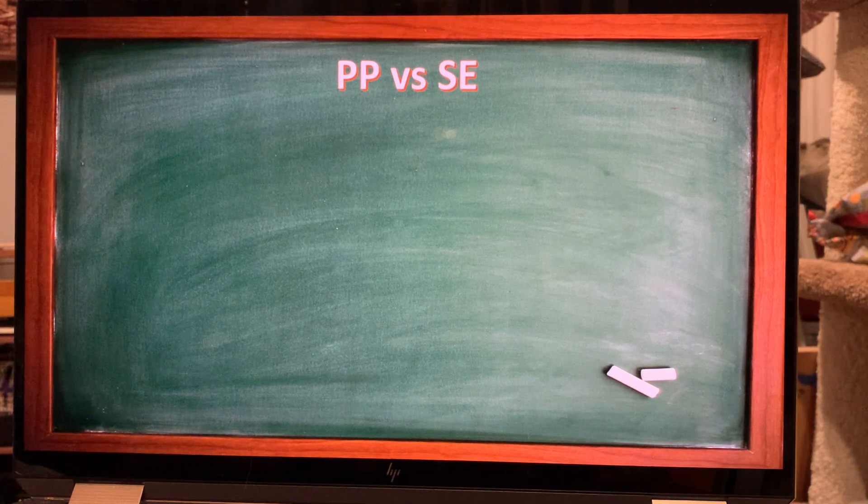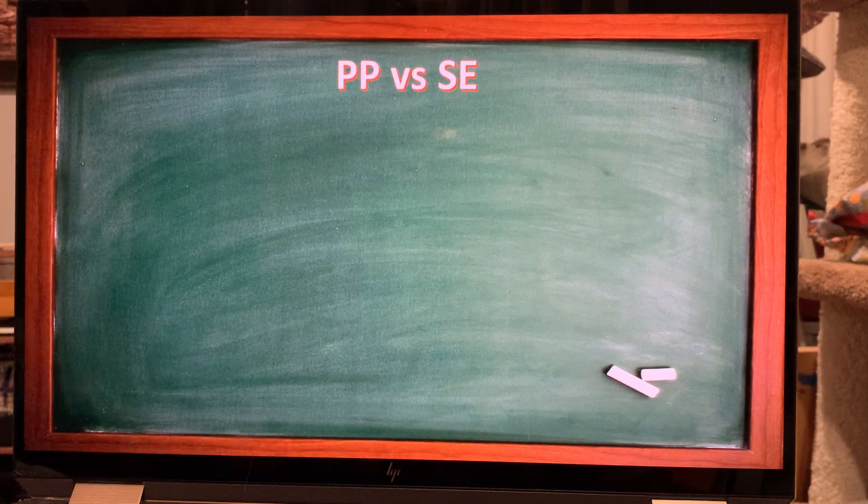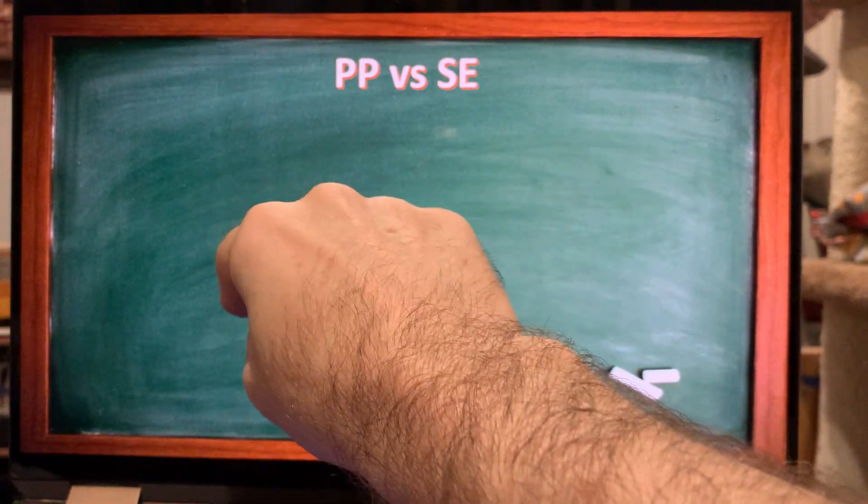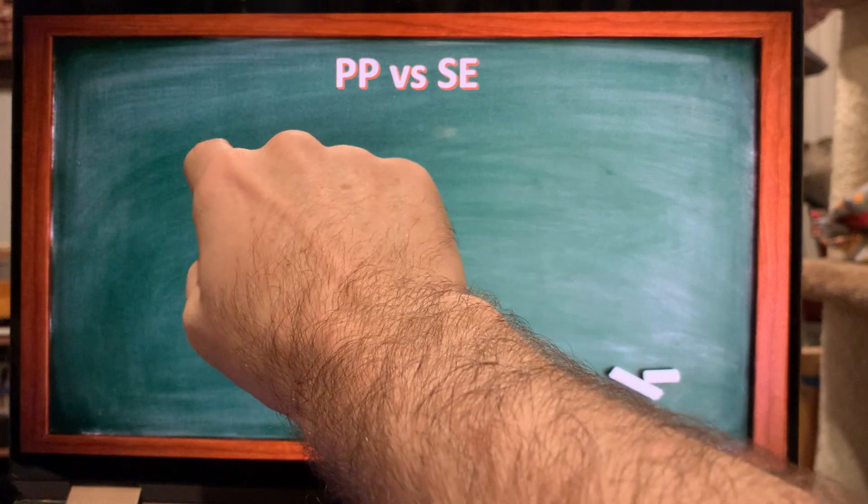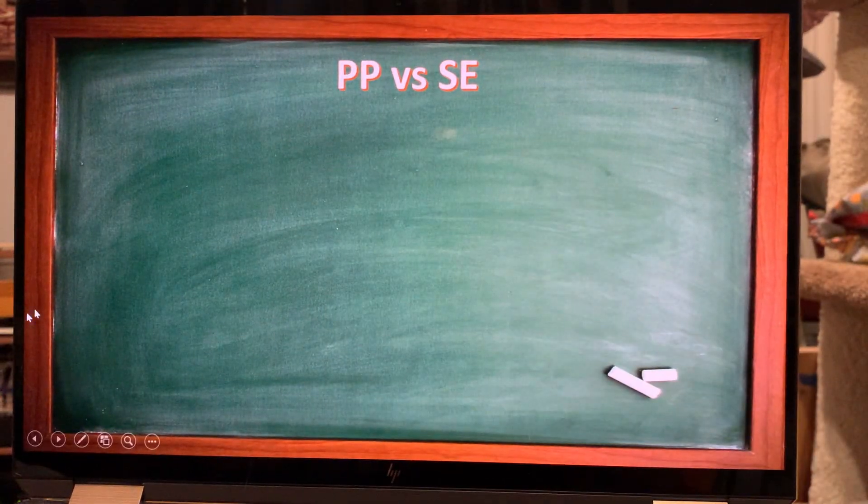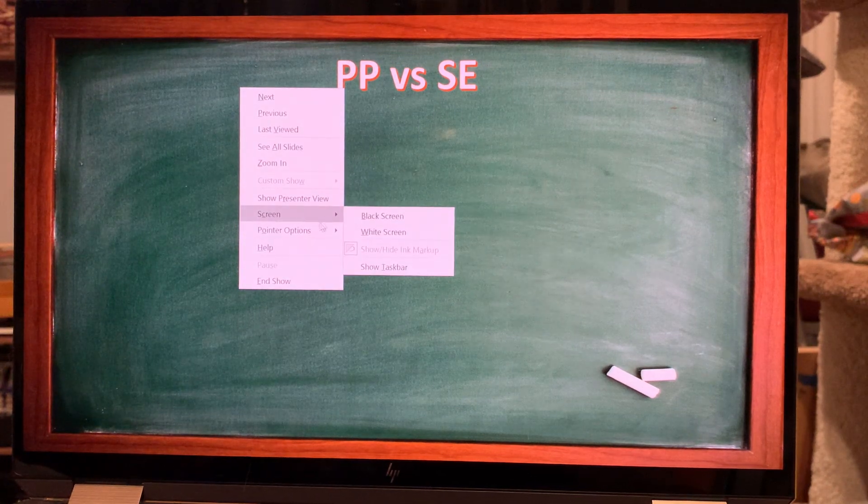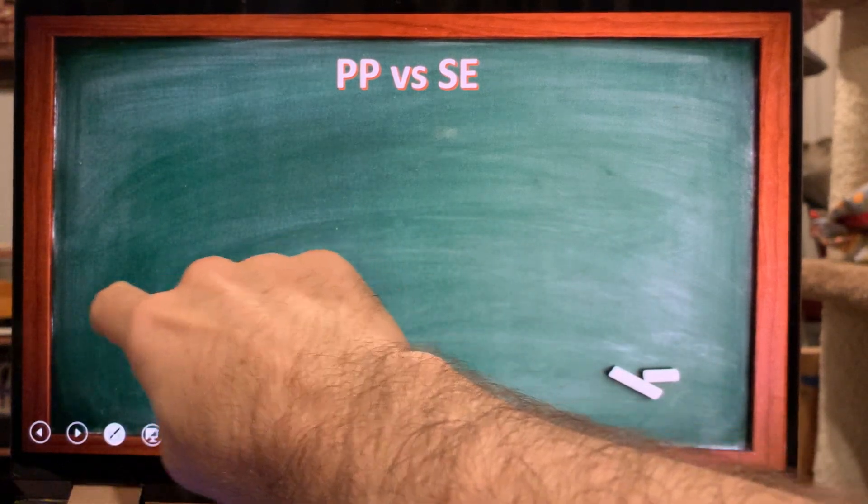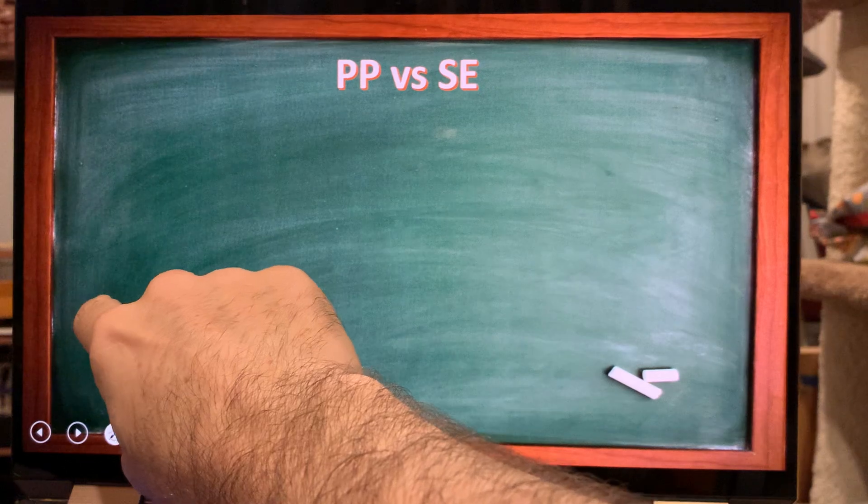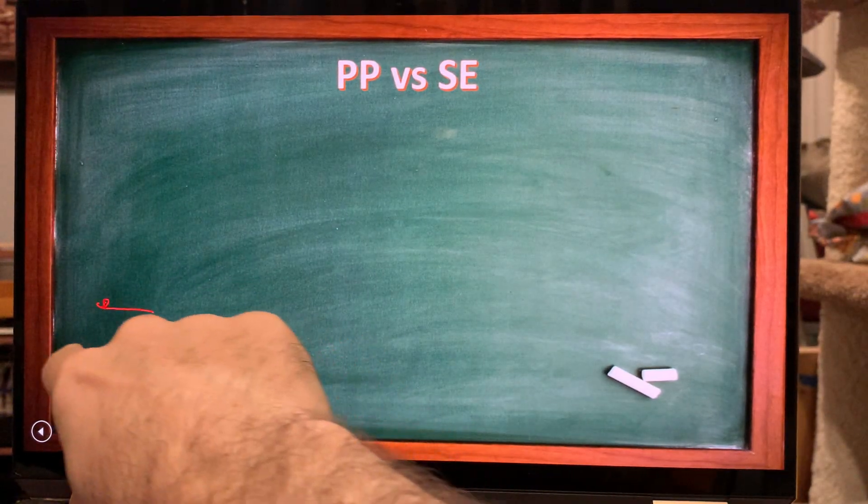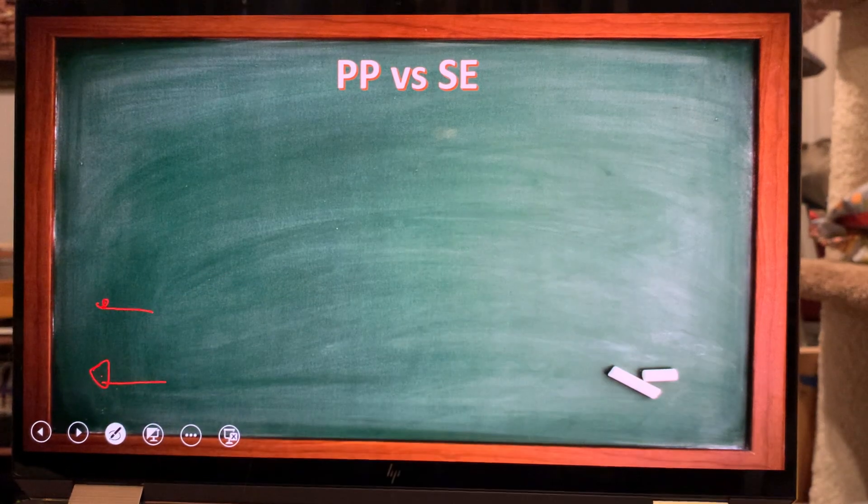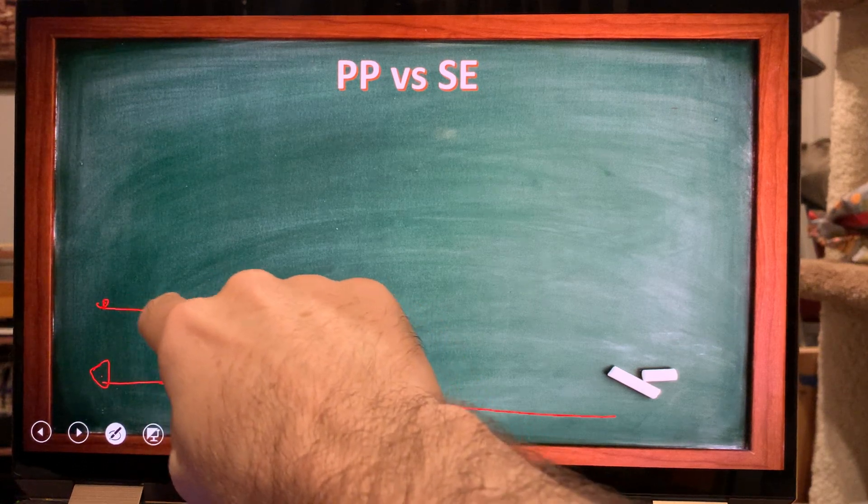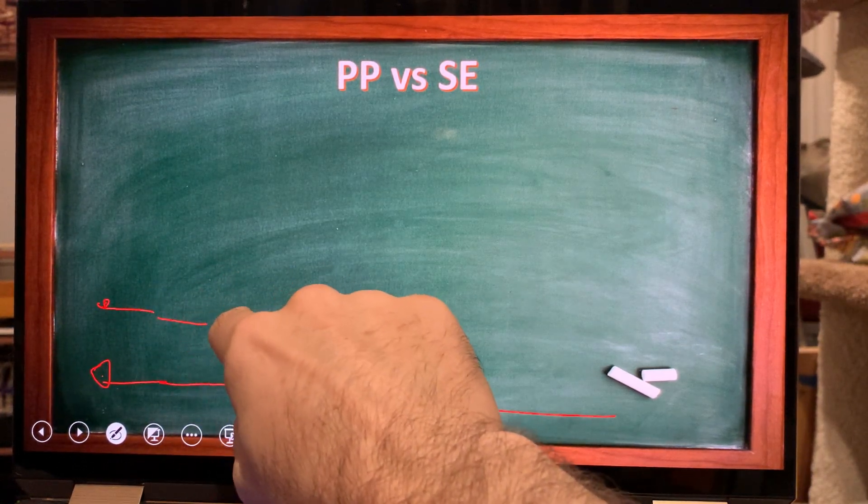So basically for single-ended amplification, let's just draw a simplified single-ended amplifier. Let's make it a two-stage triode amplifier. So here is our input, so we have our RCA jack here, negative and the positive, so the negative goes to the ground, and the positive will go to the grid.